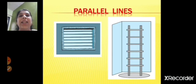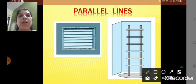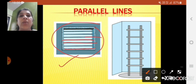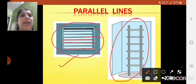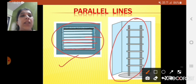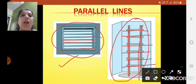Now let's start with today's session. Today we are going to see about parallel and perpendicular lines. You can see here on the screen the parallel lines. The first picture shows bars on a window — these bars are parallel to each other. The second figure is of a ladder. The two side lines of the ladder are parallel lines, and the steps of the ladder are also parallel to each other.